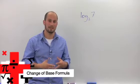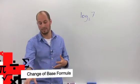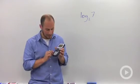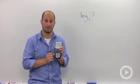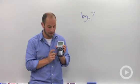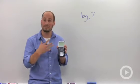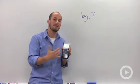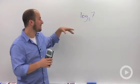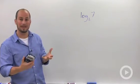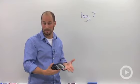The change of base formula for logs. So if you look at your calculator, what you notice is that you actually only have two buttons that relate to logarithms. You have log and you have natural log. So those are the only two bases that your calculator can actually handle. So if we want to tackle something like log base 2 of 7, we need to figure out a different way to enter this into our calculator.